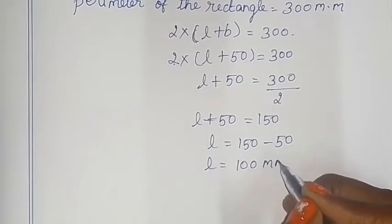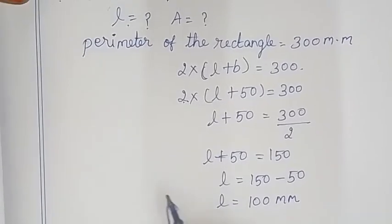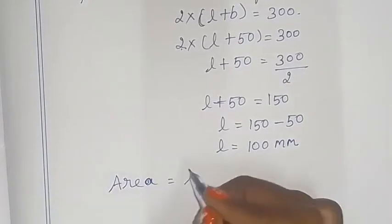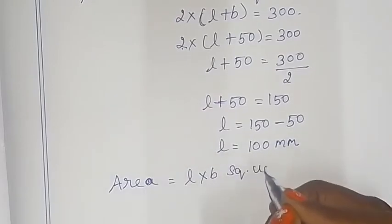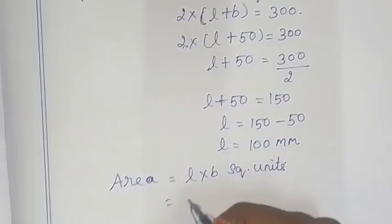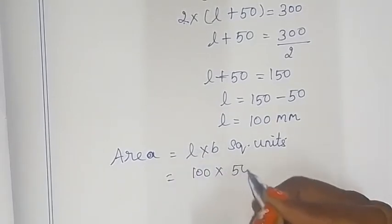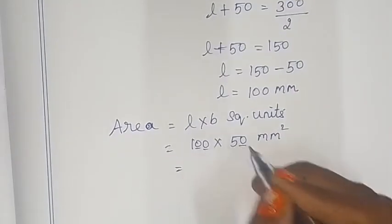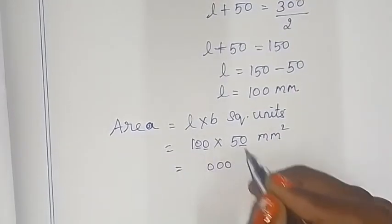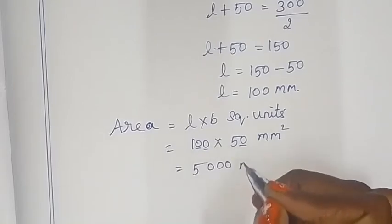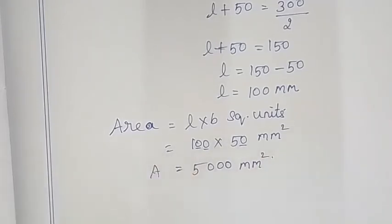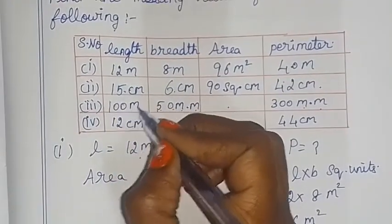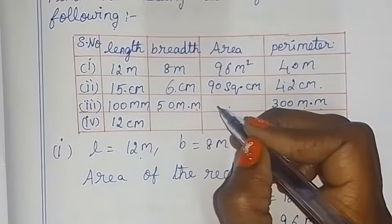Now we have the length, so we can find the area. Area = length × breadth square units = 100 × 50 mm². That gives us area = 5000 mm². So the length is 100 mm and the area is 5000 mm².